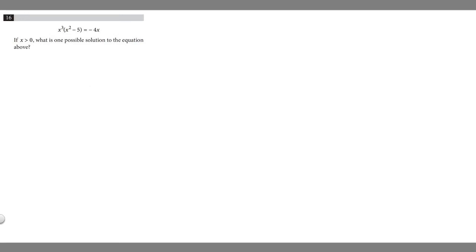So in this problem we're told that if x is greater than 0, what is one possible solution to the equation above? So we're given this equation, which is x cubed times x squared minus 5 is equal to minus 4x. And so what we're trying to do is find a solution to this equation. So basically we're going to be solving for x.